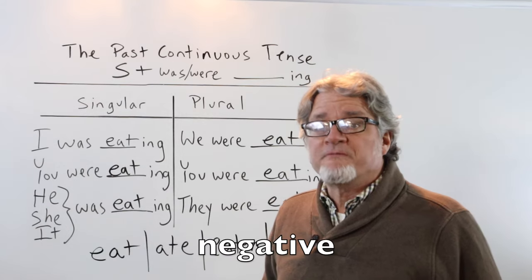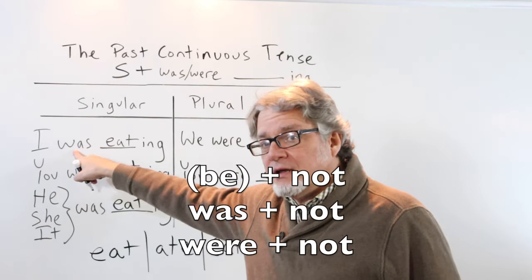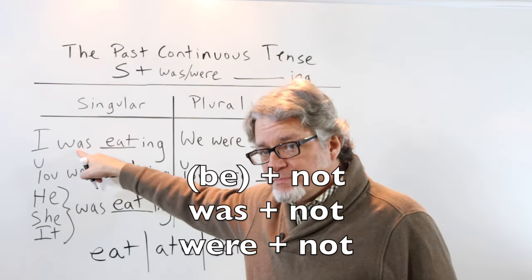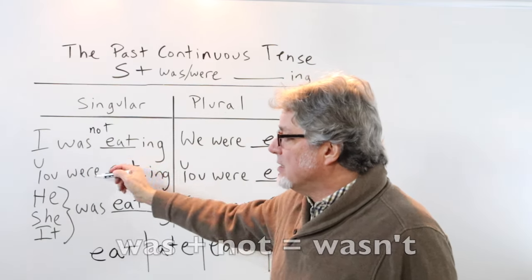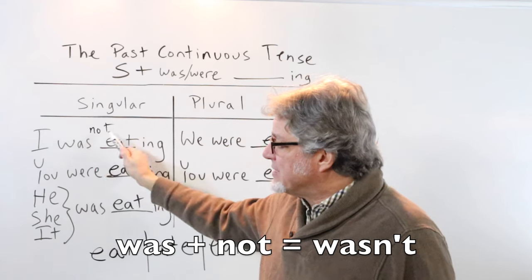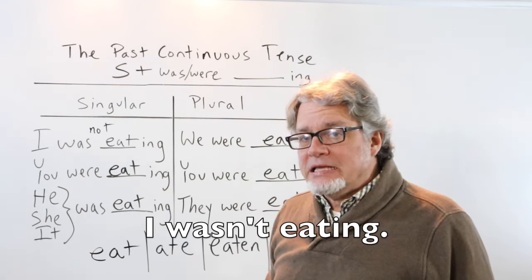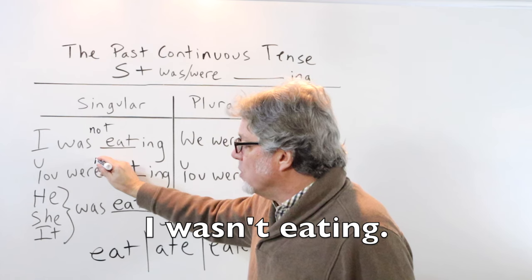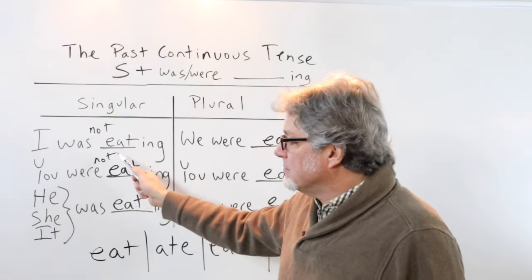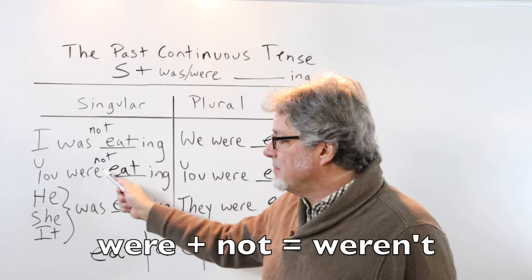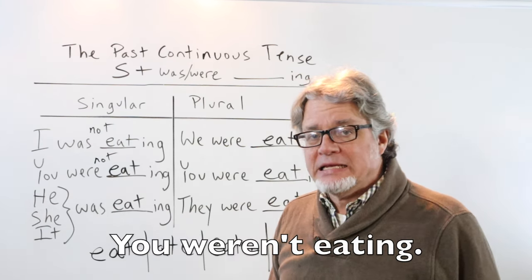To form the negative, use not after the verb be. I was not eating. Combined with a contraction: I wasn't eating. You were not eating — combined: you weren't eating.